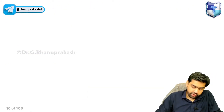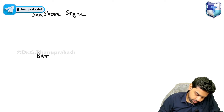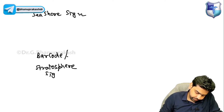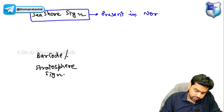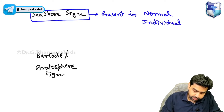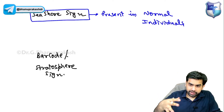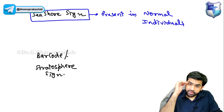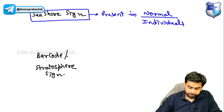Based on the E-FAST lung assessment, you have something called the seashore sign. The seashore sign is present in normal individuals — the lung expands, comes and hits the ribcage, then goes back, just like waves hitting a seashore. This is what you see in normal lungs.